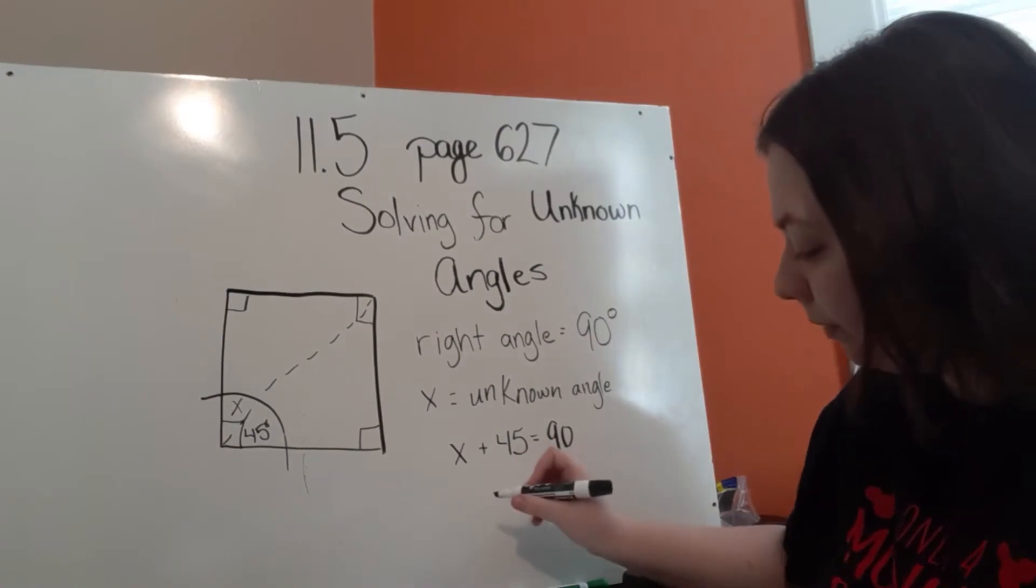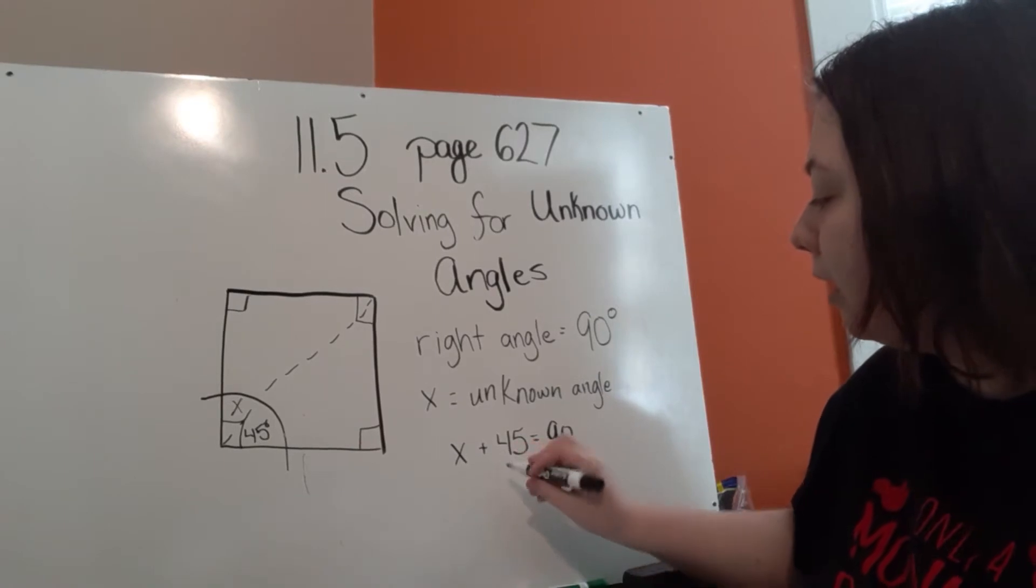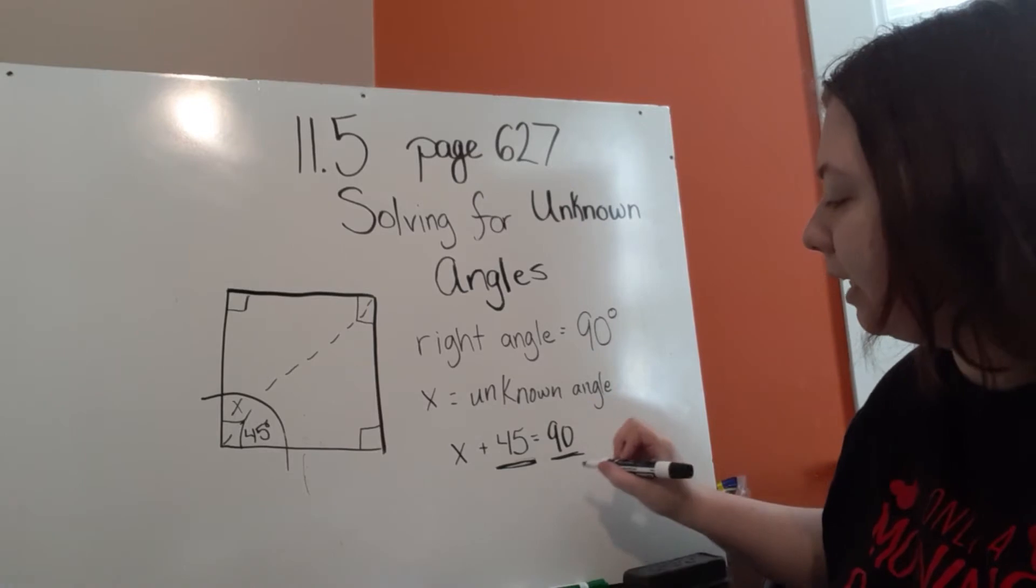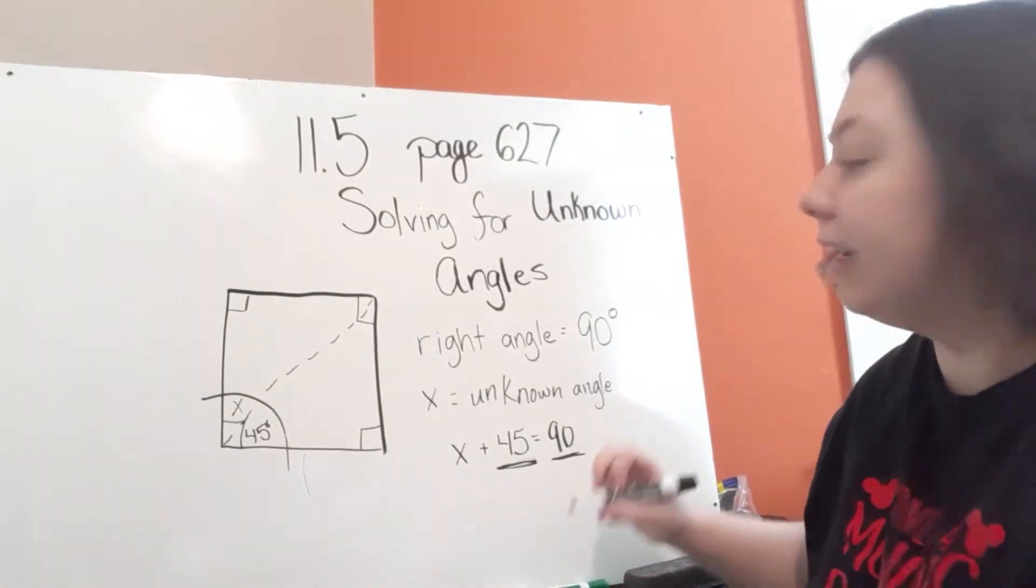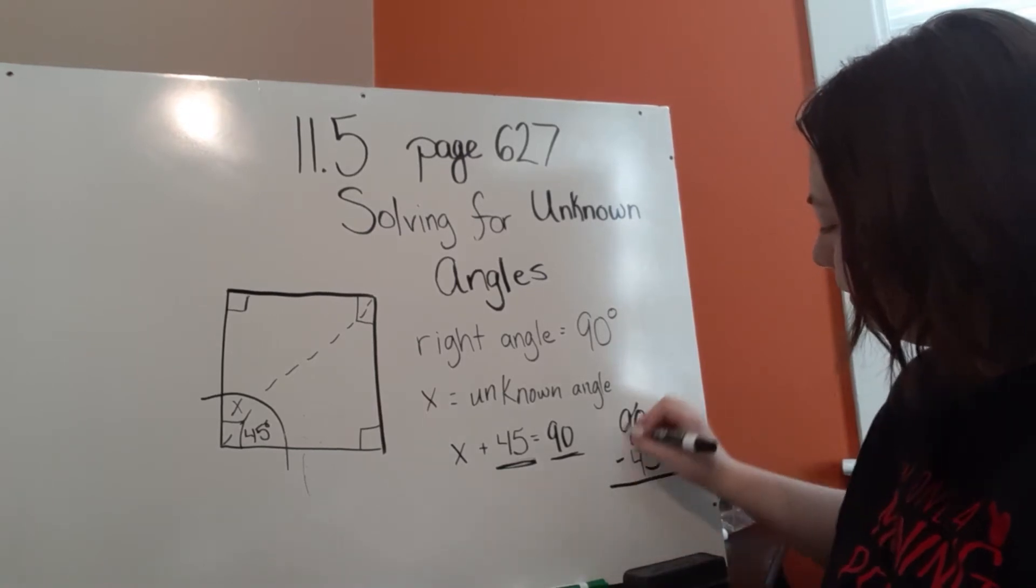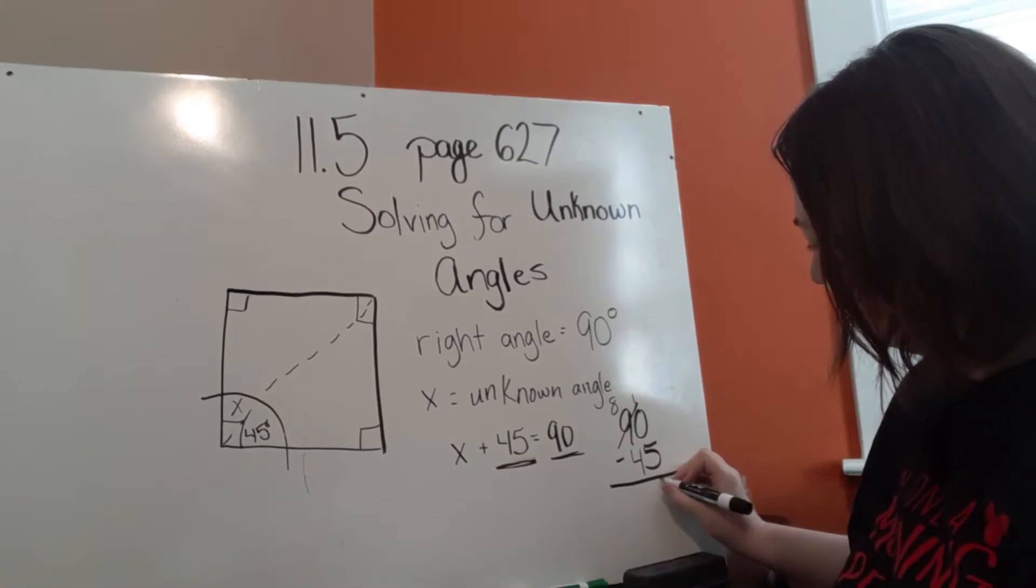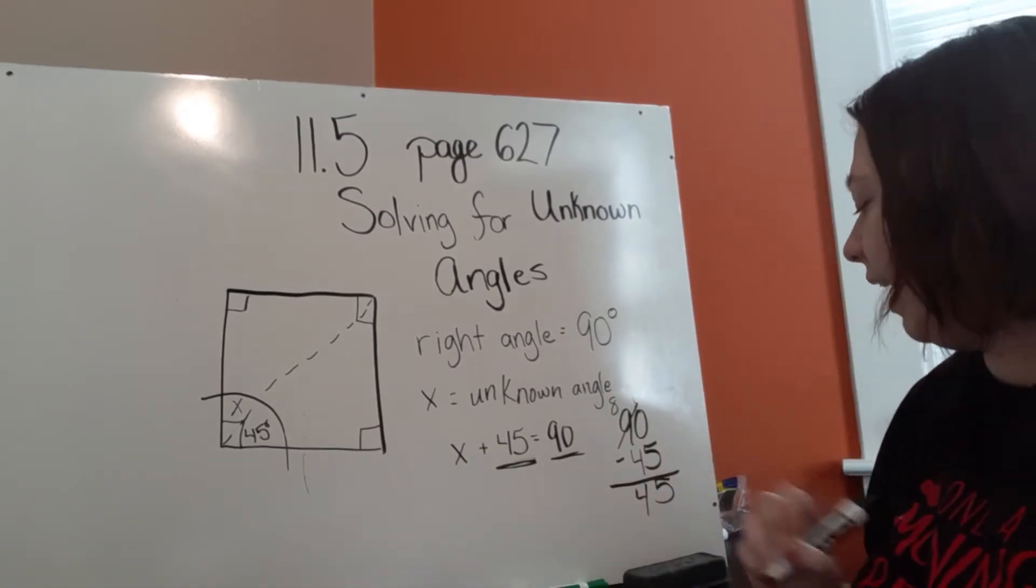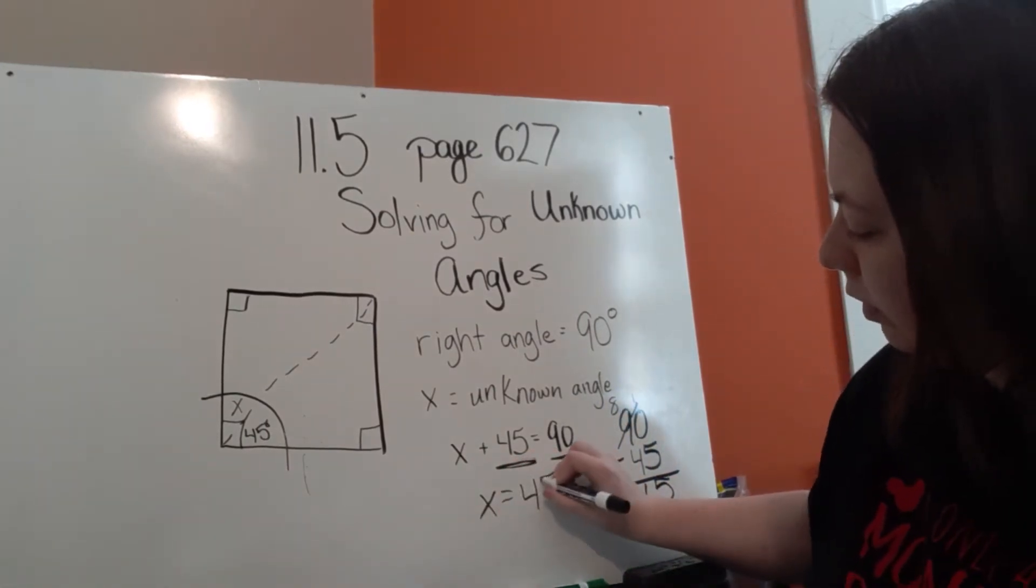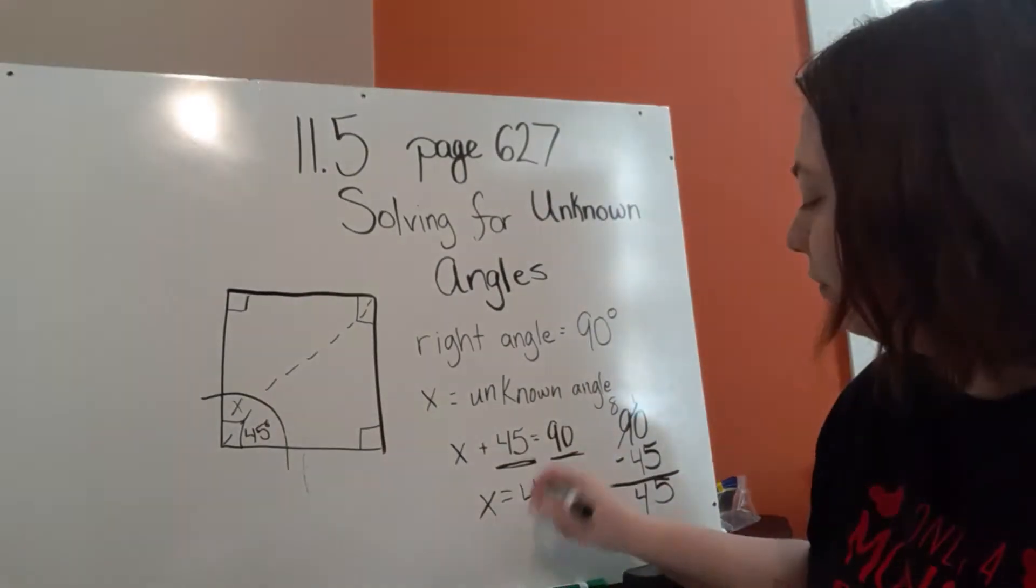So in order to figure this out, if we already know that one part is 45 and one part is 90, we can subtract 45 from 90. 90 minus 45 is 45. So we can say that X is equal to 45 degrees.